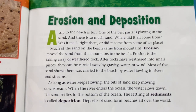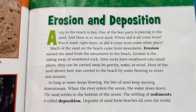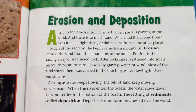Erosion is the taking away of weathered rock. After rocks have weathered into small pieces, they can be carried away by gravity, water, or wind. Most of the sand shown here was carried to the beach by water flowing in rivers and streams. As long as water keeps flowing, the bits of sand keep moving downstream. When the river enters the ocean, the water slows down and the sand settles to the bottom.